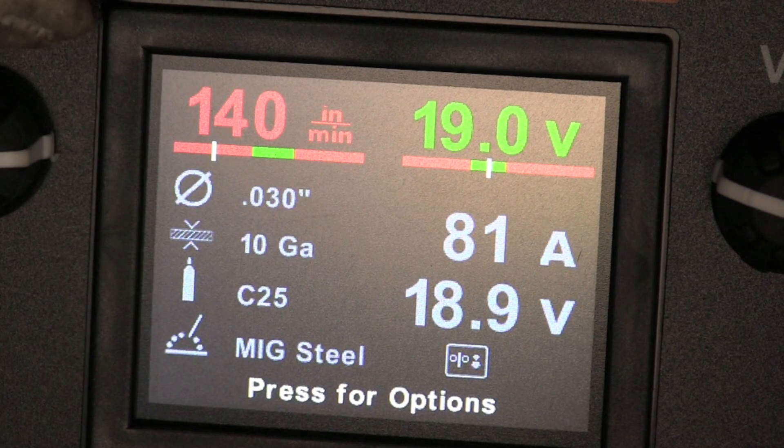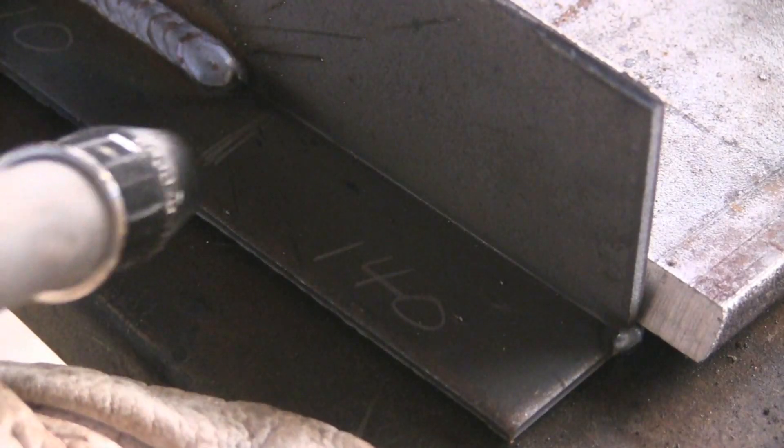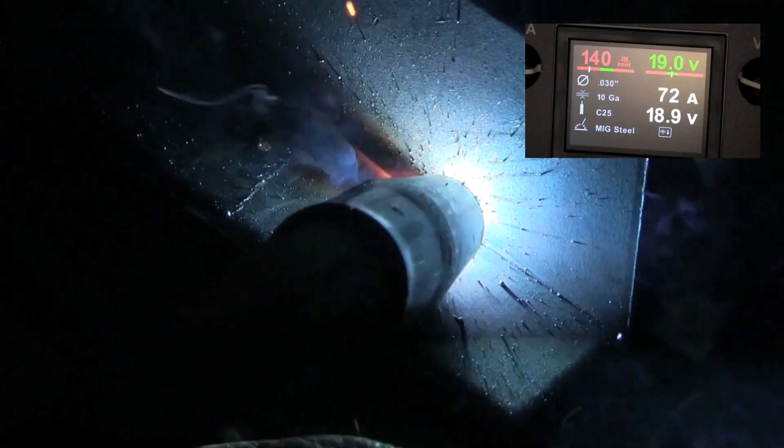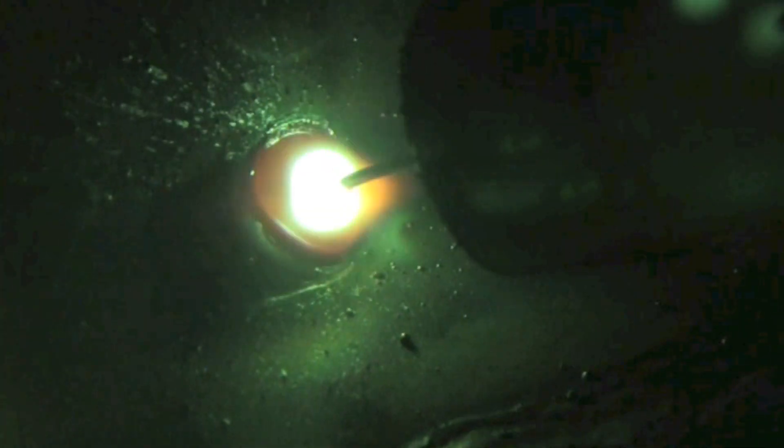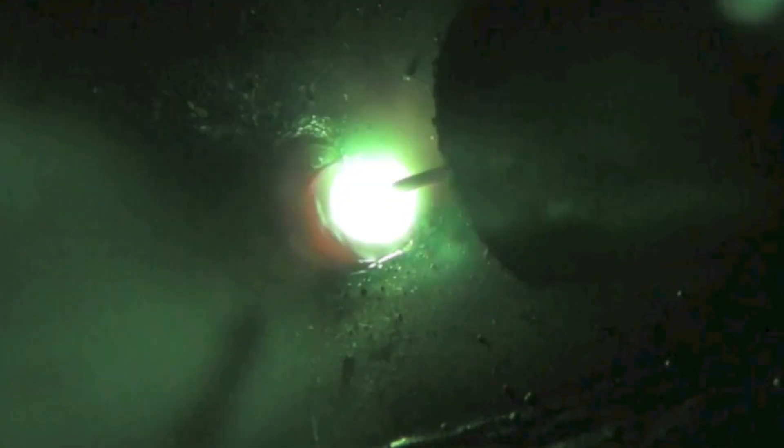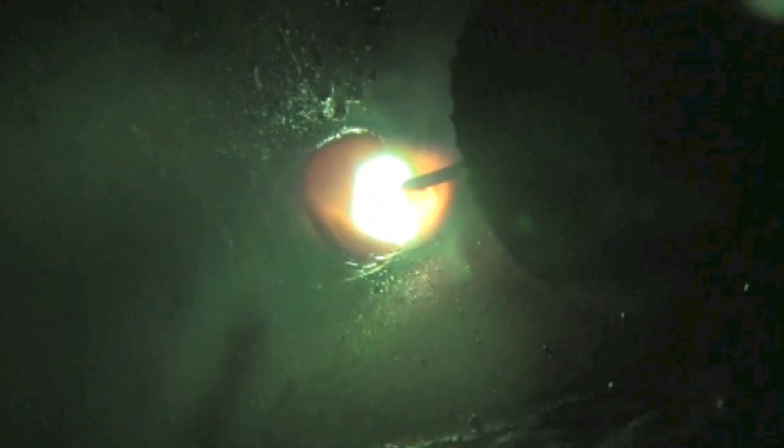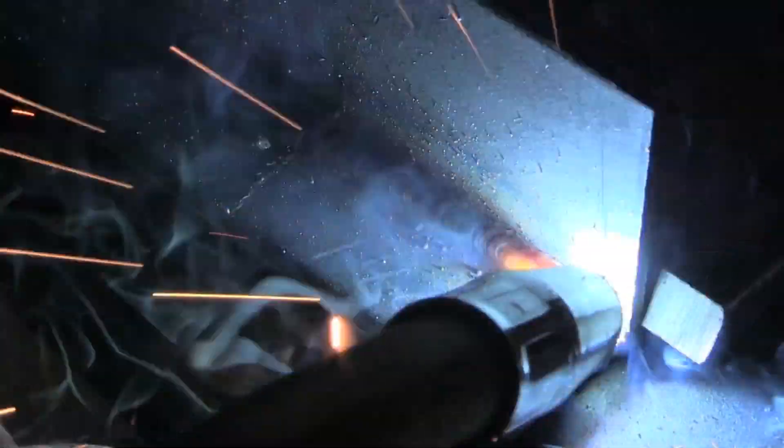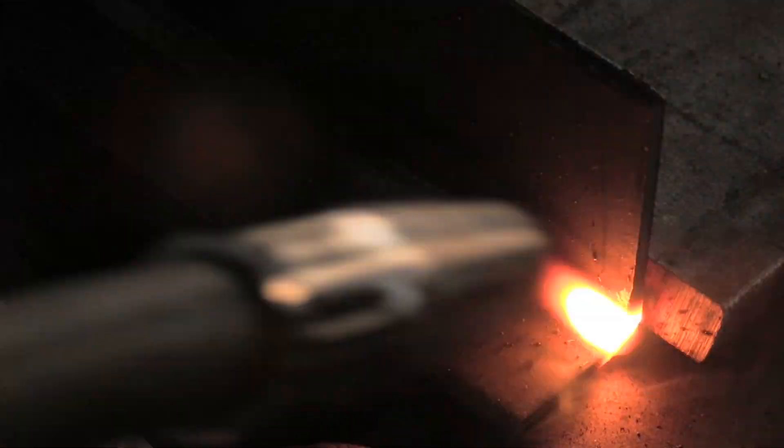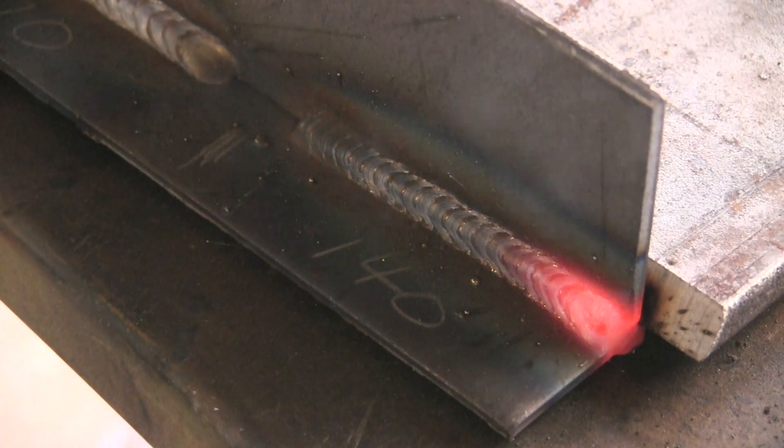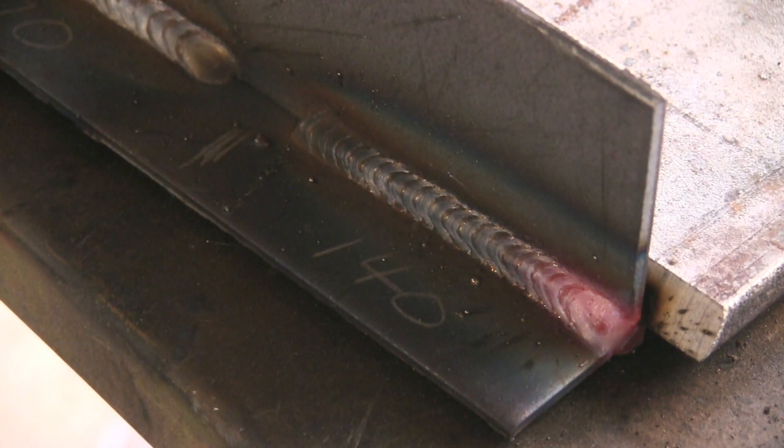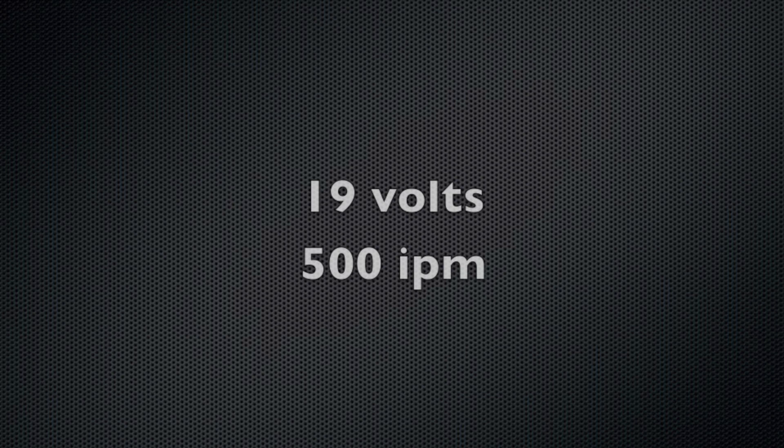Now we're going ridiculously low here, 140 inches a minute. Barely can keep it lit. All that hissing and popping, much lower and that wire would melt all the way back to my contact tip, and then I'd be changing out my contact tip. But this is super low. And this is the reason why short circuit MIG welding requires a lot of testing to qualify a procedure, because the end result is hard to tell what went on.